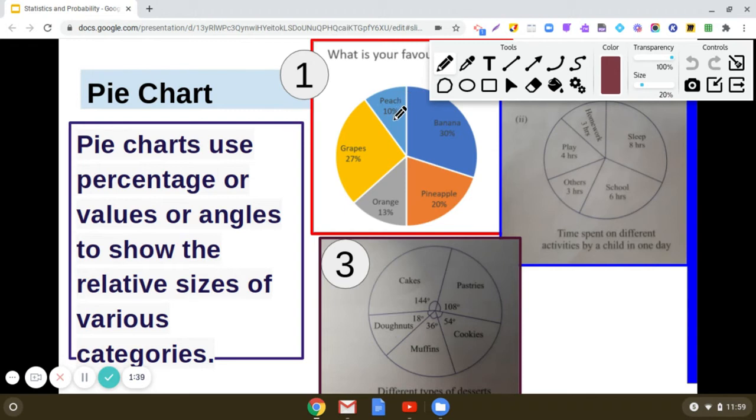It shows 10 percent like peach, 30 percent banana, 20 percent pineapple, 30 percent orange, and 27 percent grapes. This is one way of representing information, and the entire piece of information makes 100 percent, completing the circle.